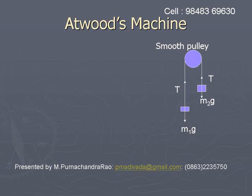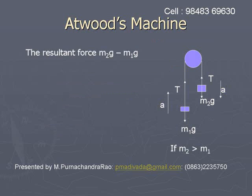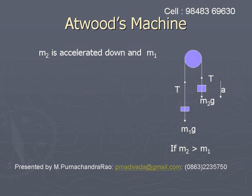In Atwood's machine, we consider a massless pulley that is rigidly fixed, with a massless smooth string passed over it. Two masses m1 and m2 are attached at the ends of the string; generally they are of unequal mass. The weights m1g and m2g act vertically downward. If m2 is greater than m1, the resultant force will be downward on m2 and upward on m1, creating acceleration. Both blocks move with the same constant acceleration, but m2 accelerates downward and m1 upward.